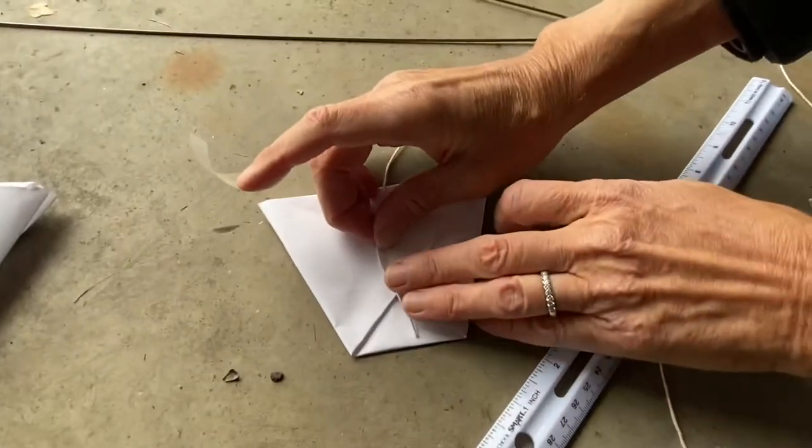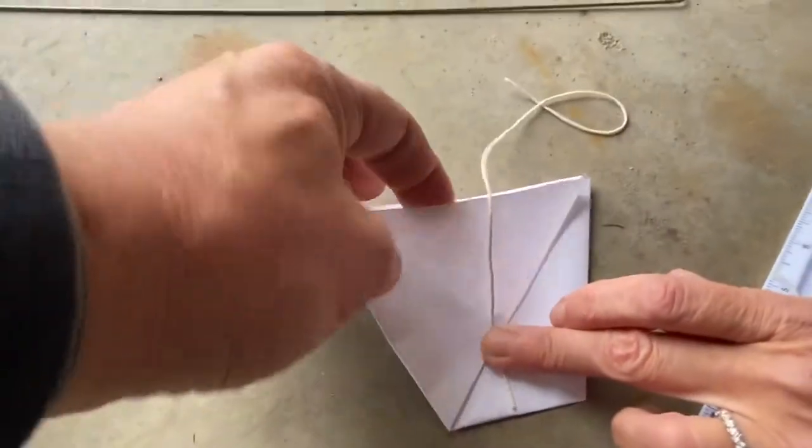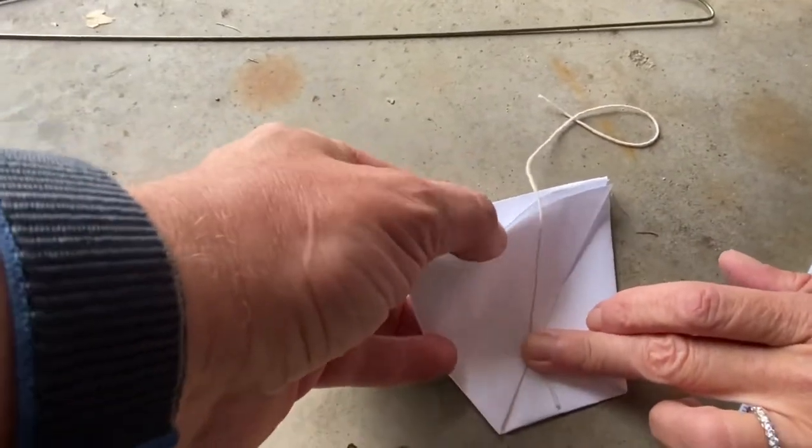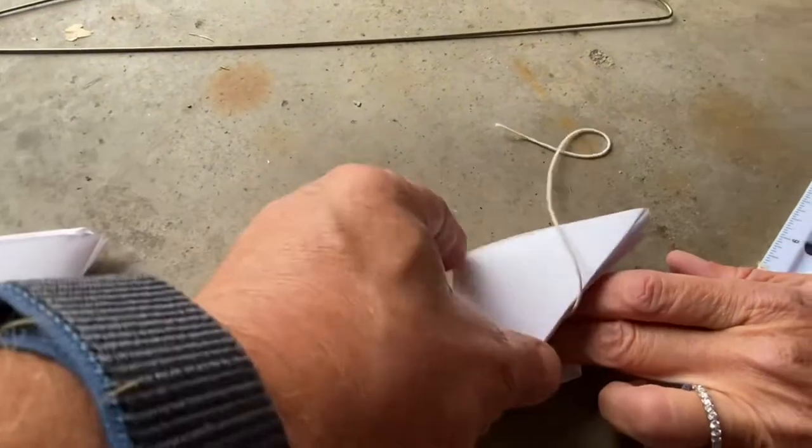So the next thing to do is to put the tape on the cup. And we want to make sure that you're taping the string on the side that you folded in. Not this side that's got the loose flap.